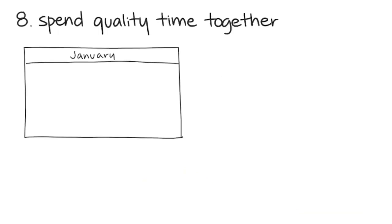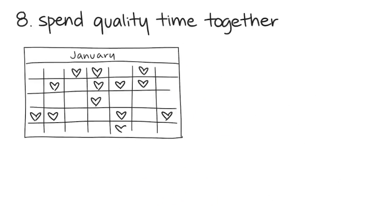Number 8. Spend quality time together. It's not about the amount of activities you guys end up doing, but the way you two interact with each other. Spending quality time with an introvert is crucial. Although it may seem as if they go off on their own,